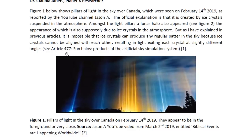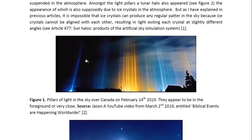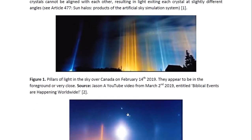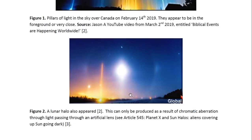As I have explained in previous articles, it is impossible that ice crystals can produce any regular pattern in the sky, because ice crystals cannot be aligned with each other, resulting in light exiting each crystal at slightly different angles. You may look at article 477 entitled 'Sun Halos: Products of the Artificial Sky Simulation System.' Here you can see these pillars of light in the sky over Canada. They appear to be in the foreground, in front of features behind them, very close to the observer.